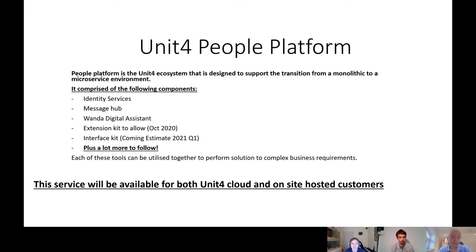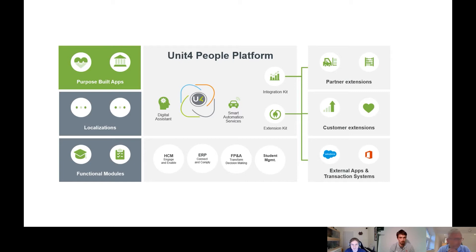We were led to believe at one point this was only SaaS, but if it's on-site as well that gives more flexibility. So rather than tell me about it, show me. This is a Unit 4 diagram — there's a lot of information on there. At the bottom you've got the various Unit 4 applications: HCM, Unit 4 ERP, FP&A, student management. You've got external applications on the far right. And everything is tied together by the Unit 4 People Platform — everything exists within this ecosystem of services.